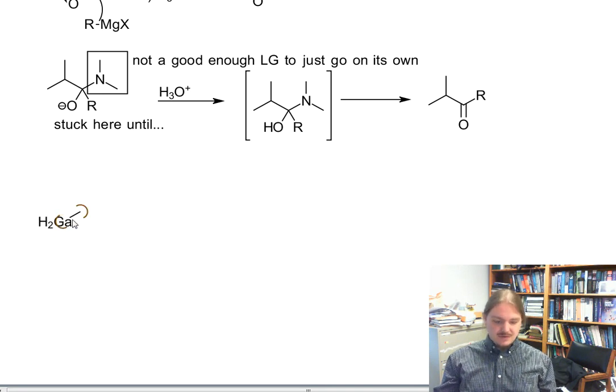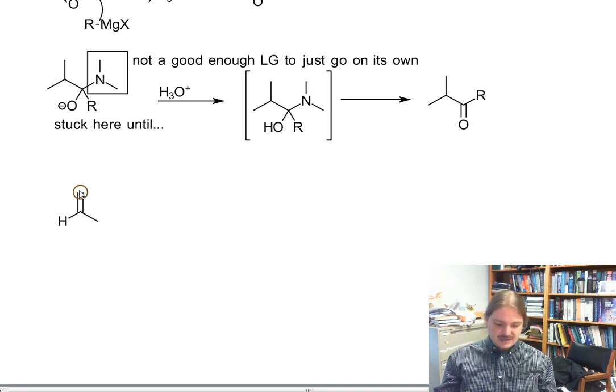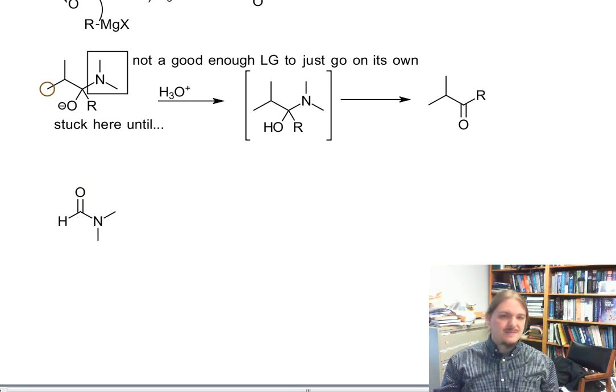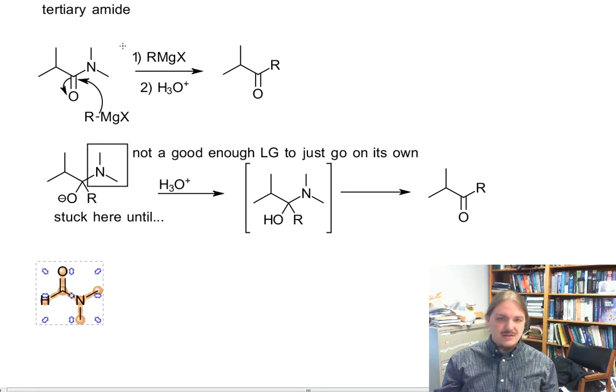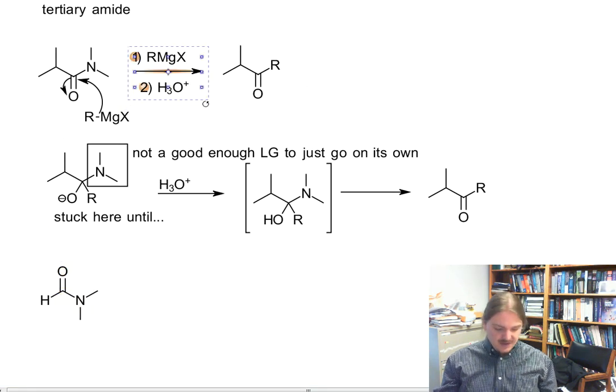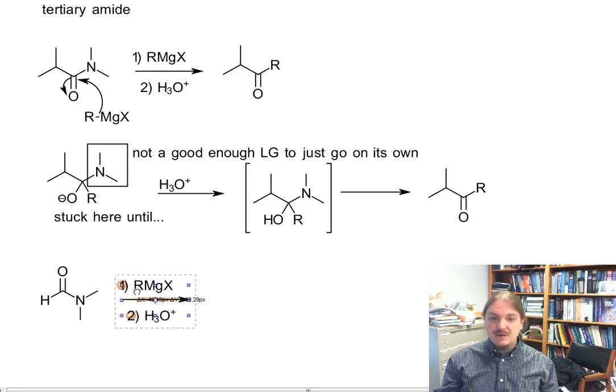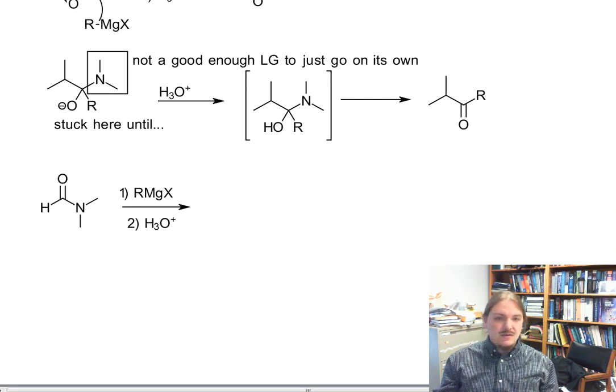There's one other really nifty application of this. If our tertiary amide was actually a formamide - dimethyl formamide, because it's inexpensive, is a really good choice. If instead of having an alkyl group on the other side of the carbonyl, you have a hydrogen, this is a reaction that will make an aldehyde.